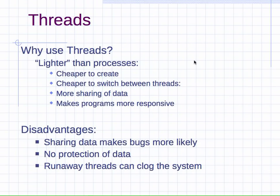So why use threads since we already have fork? Threads are lighter than processes — they're easier and cheaper to create, and it's cheaper to switch between them. You can share data with the parent process, and threads are typically used to make programs more responsive. The disadvantages are that sharing data makes bugs more likely — if two threads write to the same memory location in an uncontrolled order you can get very serious bugs.